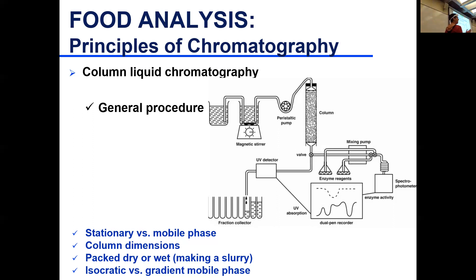As an analyst, you want to find the balance between efficiency in time and acceptable separation. Are you after perfect separation, partial separation with identification capability, or finishing in the shortest time? You adjust your column dimensions and choice of isocratic versus gradient accordingly.